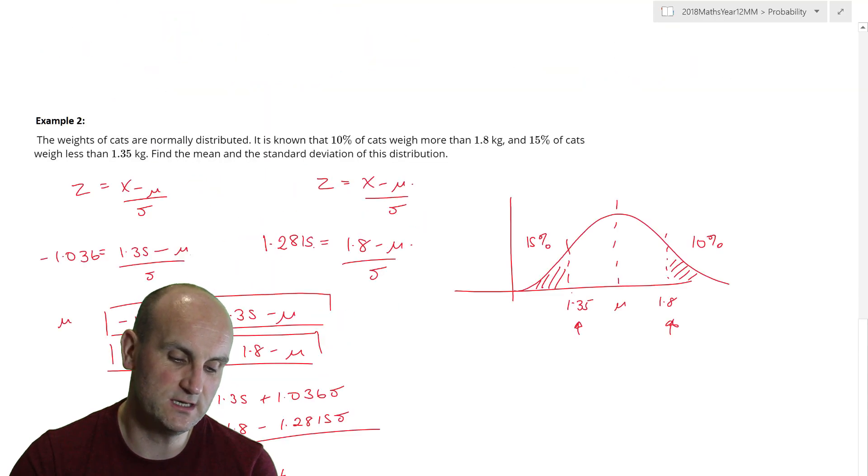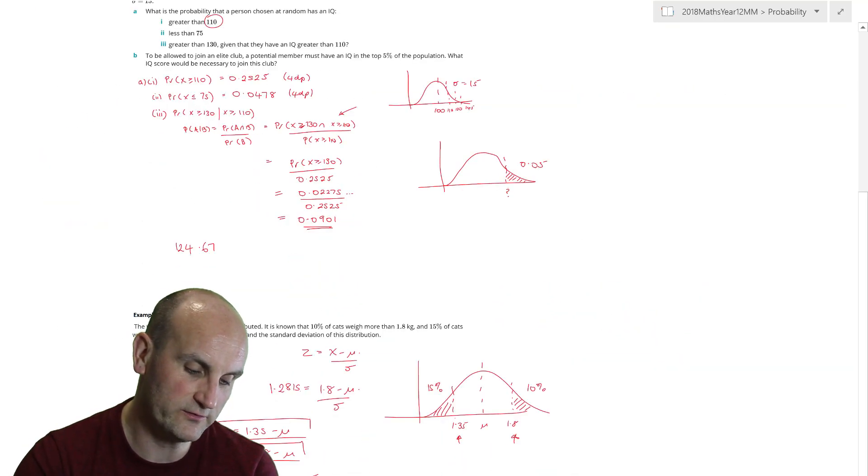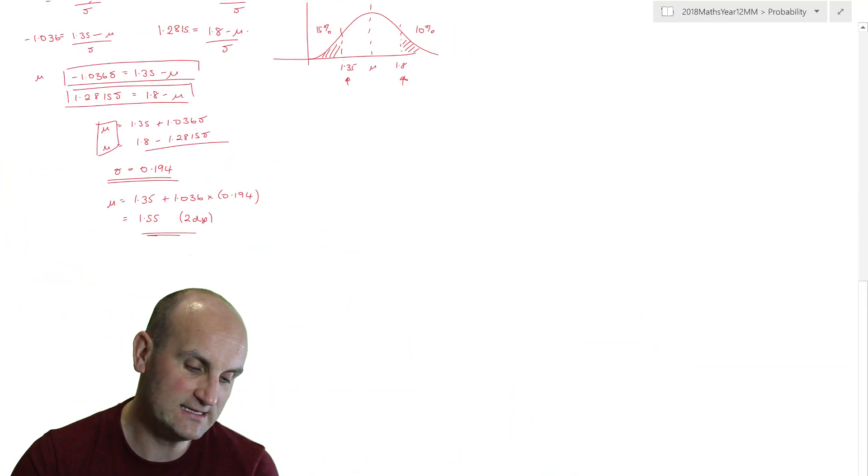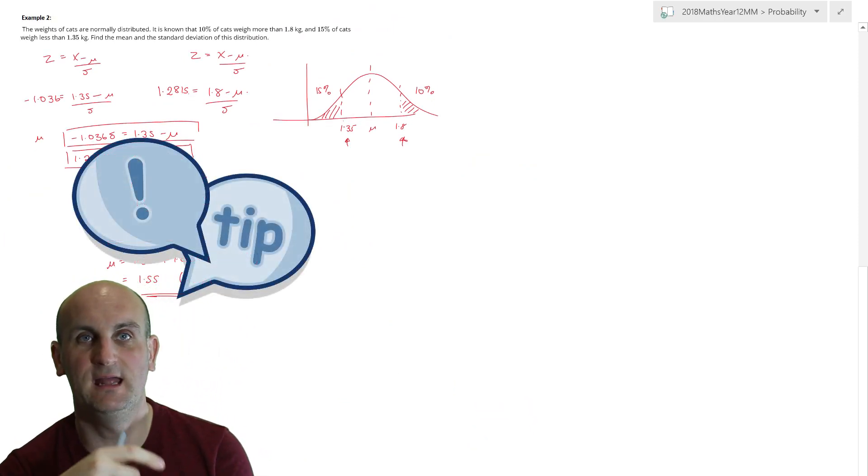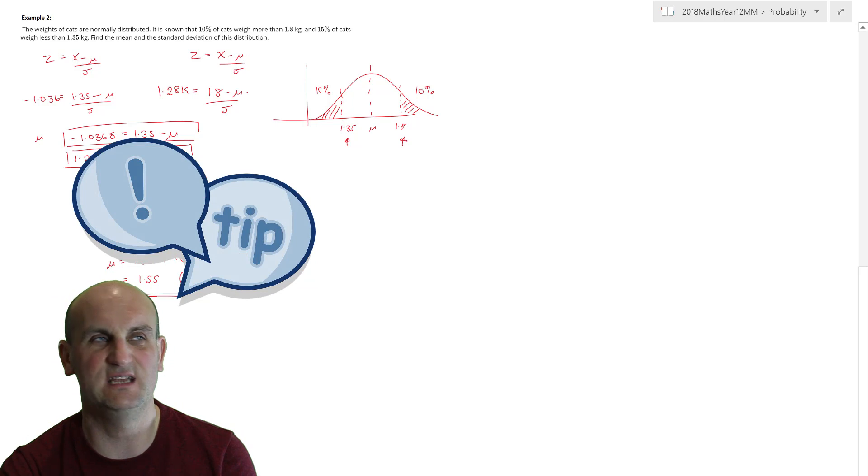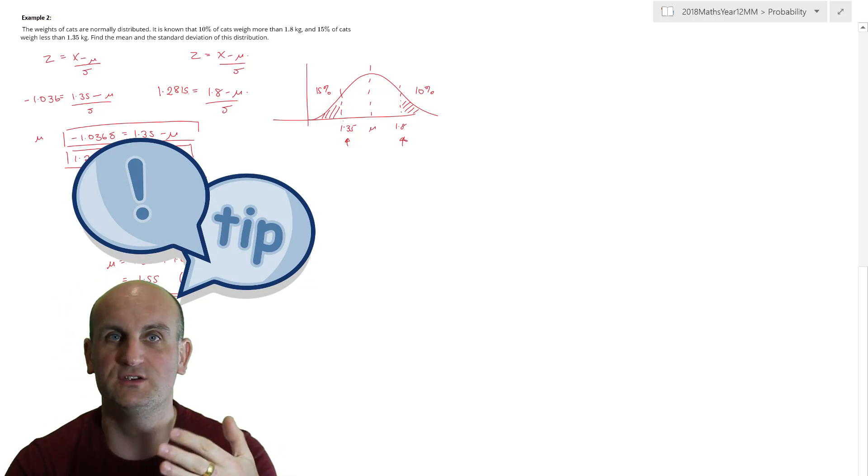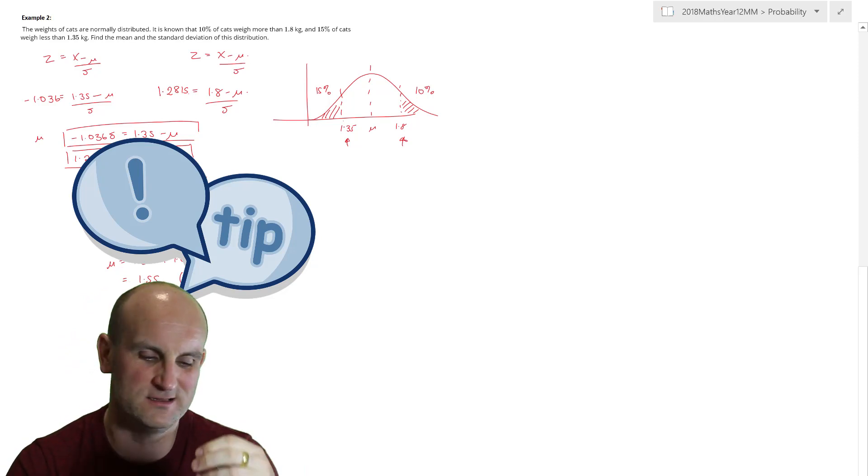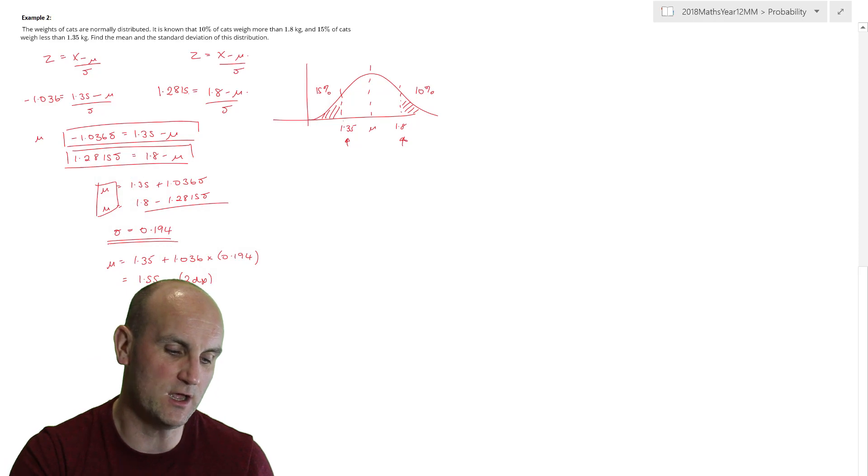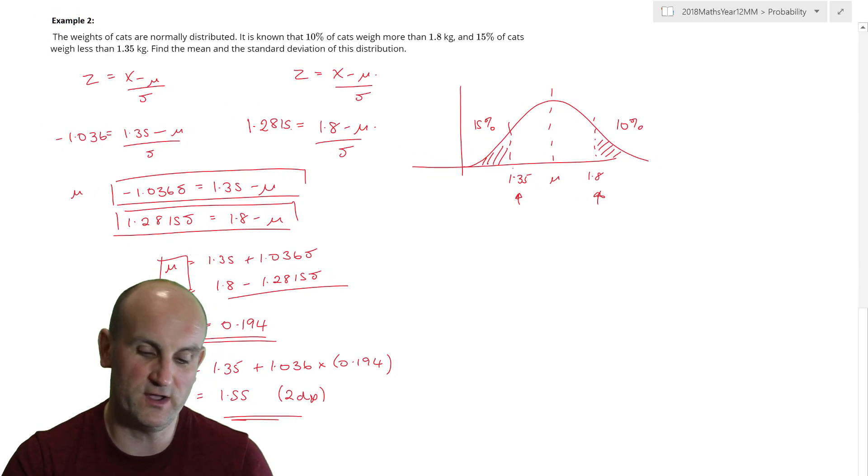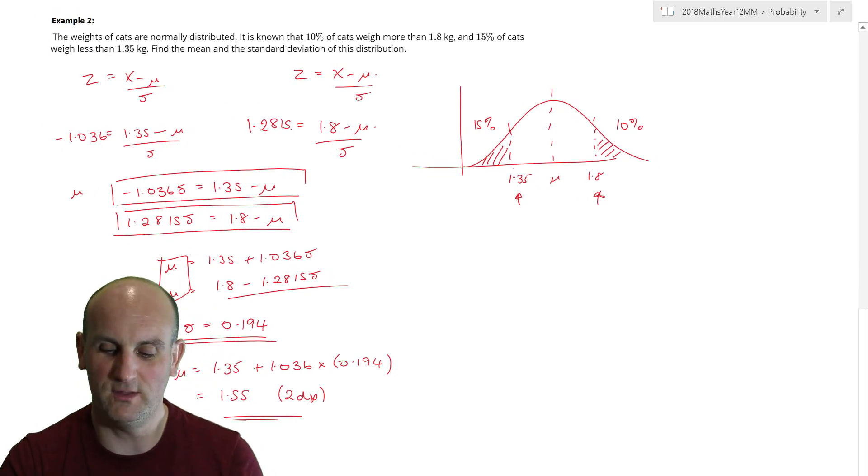This question that I've just done here, making it smaller so that it all fits onto the screen, is a textbook question. Not that it just came from the textbook. It has been in every exam that I've ever seen, every test I've ever seen, because it tests your understanding of the normal distribution, z-scores, areas, bit of algebra, simultaneous equations are all in that one question. So, if ever you were going to revise and revise and revise, my advice is to have a go at this one.